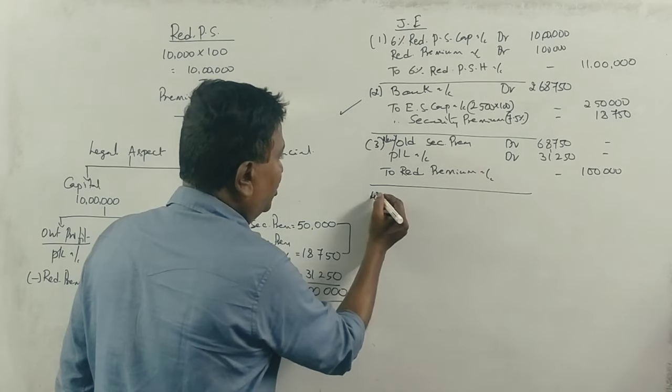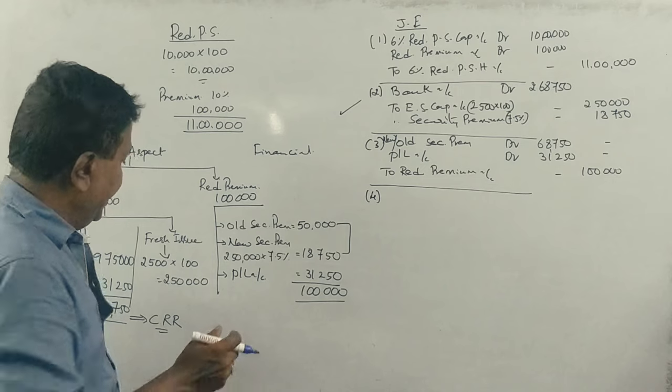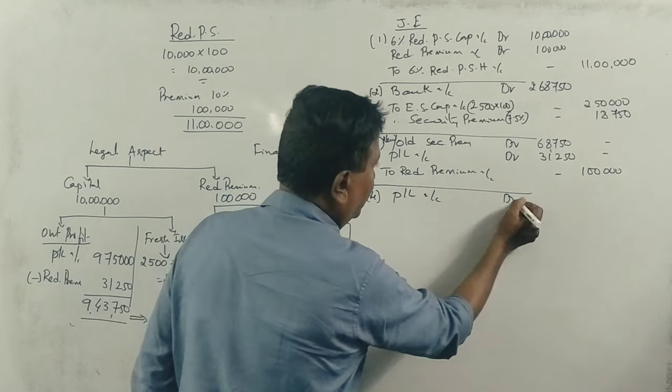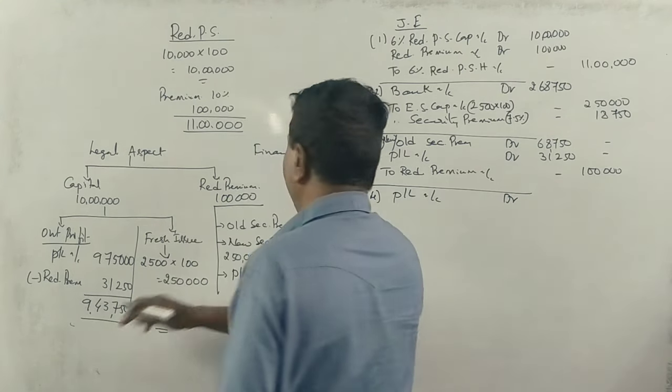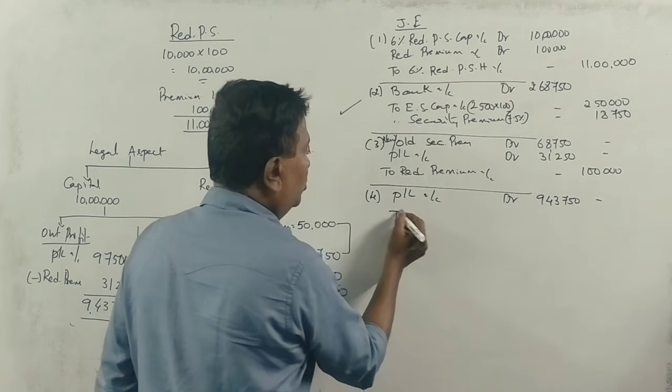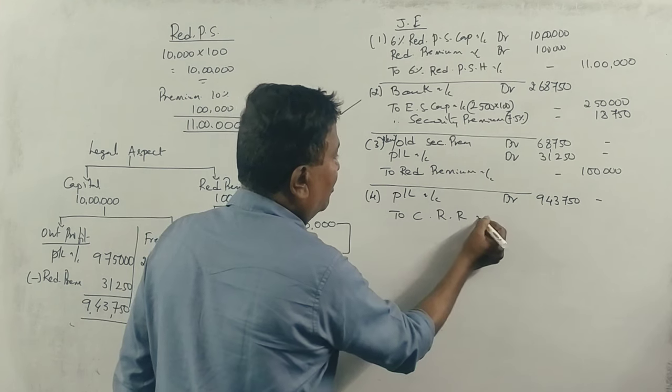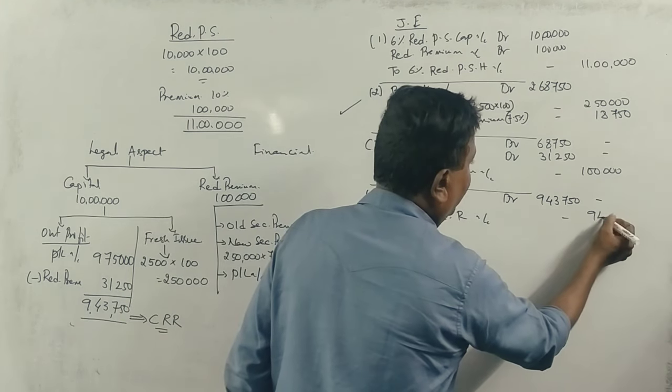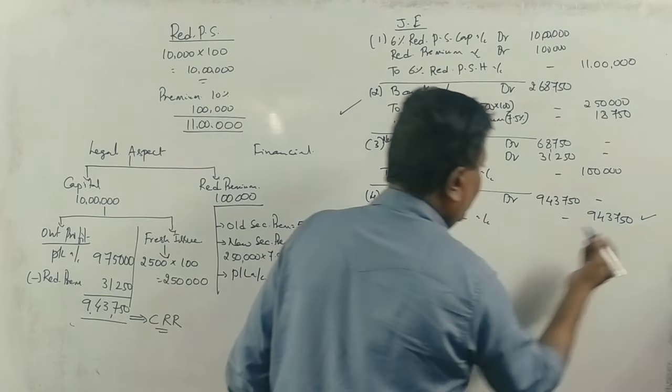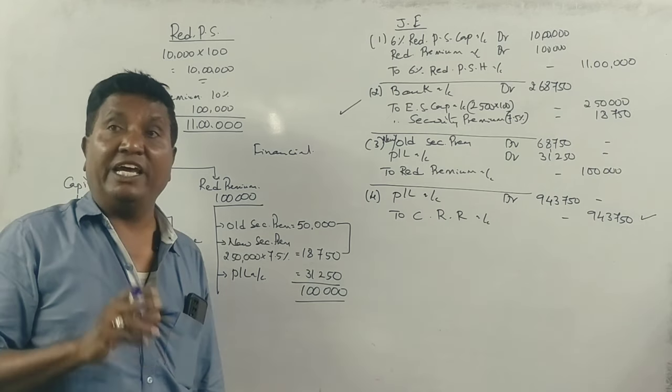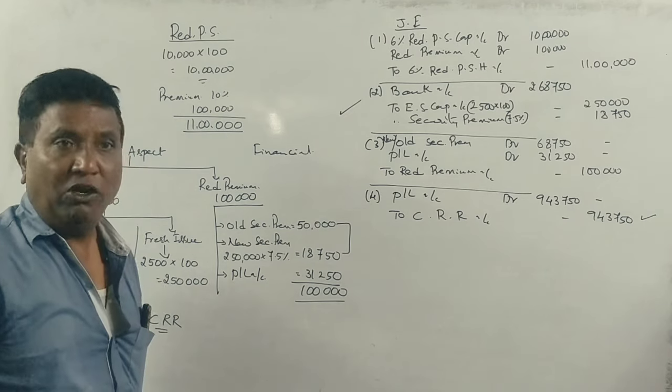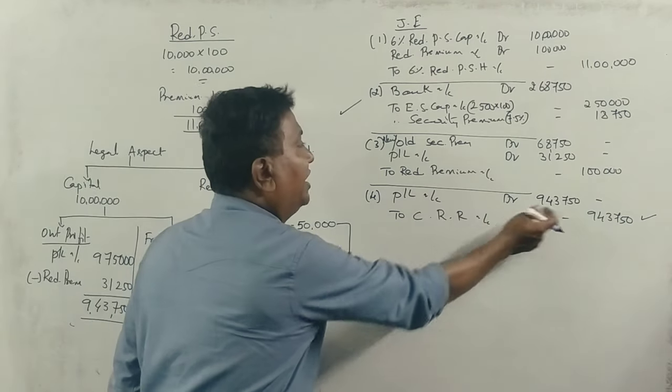Now the next entry for CRR transfer. Profit and Loss Account debit 9,43,750, to Capital Redemption Reserve Account 9,43,750. If you don't have this entry, you will lose some marks. The amount transferred to CRR is 9,43,750. Being Profit and Loss Account transferred to CRR.